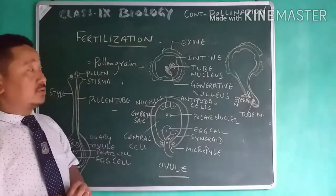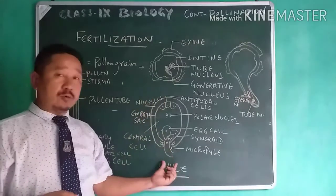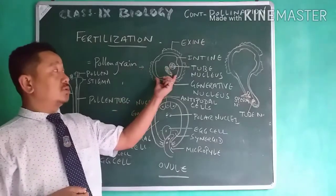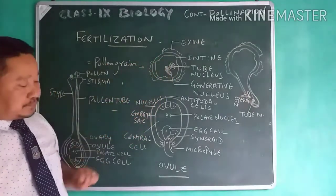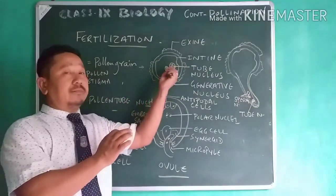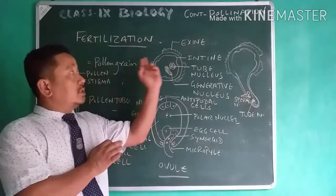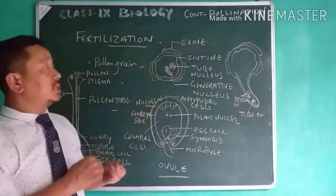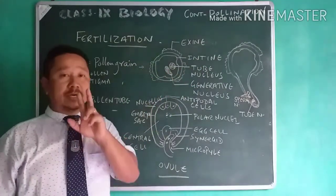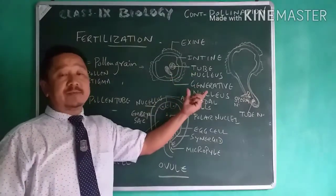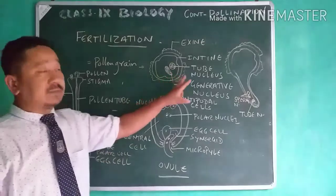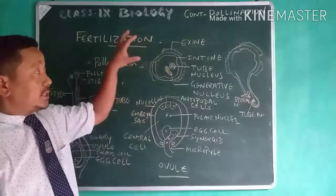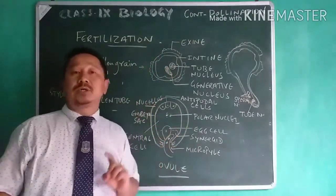If you see pollen grains under a microscope, you find a two-layered structure. The outer one is your exine, which is rough, and the inner one is called intine. It contains two nuclei — that is the tube nucleus and generative nucleus. In this form, the pollen grain is transferred to the stigma, meaning pollination takes place.